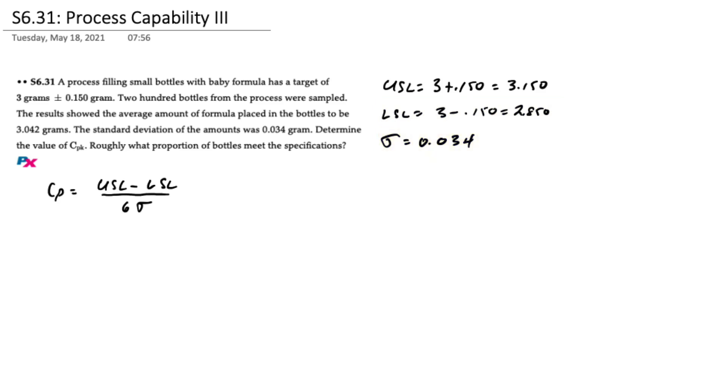Even though we're asked to calculate CPK we can calculate CP because it's always handy to know and that's equal to the upper specification limit minus the lower spec limit divided by six sigma or six standard deviations. So that's 3.150 minus 2.850 over six times 0.034.